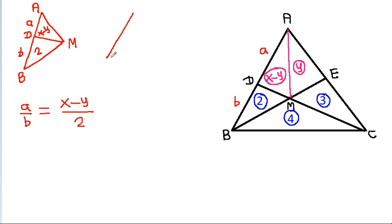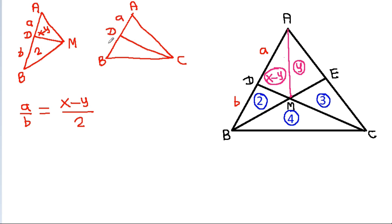Also, in triangle A, B, C with point D: AD is A, BD is B. This area is X minus Y minus 3, which equals X minus 3. And this area is 2 plus 4, which equals 6. So A divided by B is also equal to X minus 3 divided by 6.